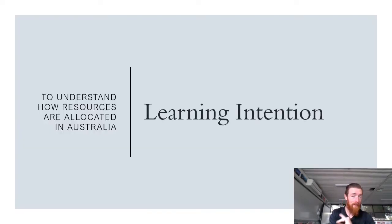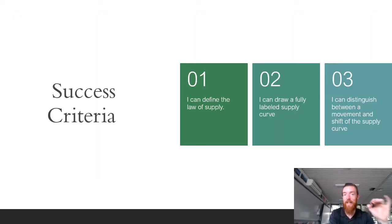So once again I'm laying attention as always in this topic has been to understand how resources are allocated in Australia, this case how businesses will allocate their resources. So our success criteria today is that you can define the law of supply, you can draw a fully labeled supply curve and you can distinguish between a movement and a shift of the supply curve. So much like with demand a movement is always from a change in selling price and shift is always from a non-price factor.